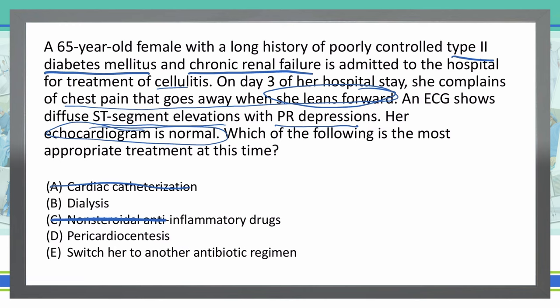Option D: pericardiocentesis. We don't see any effusions — the echocardiogram is normal — so I'm going to rule out pericardiocentesis. We don't need that.